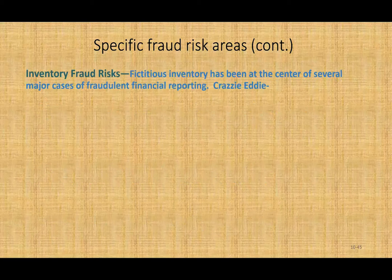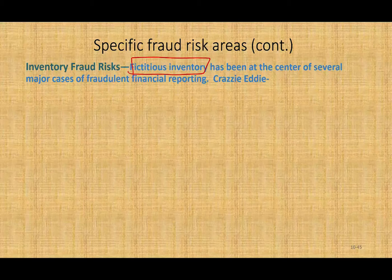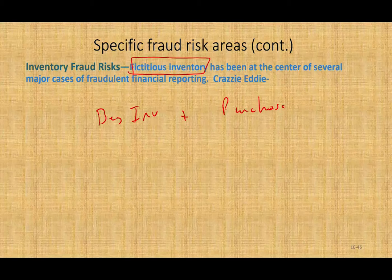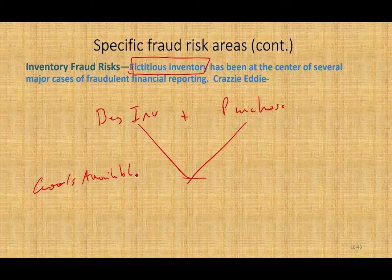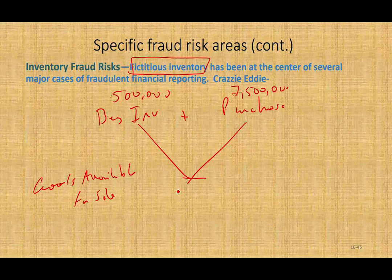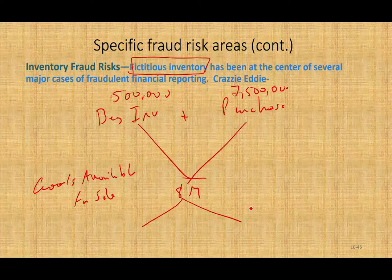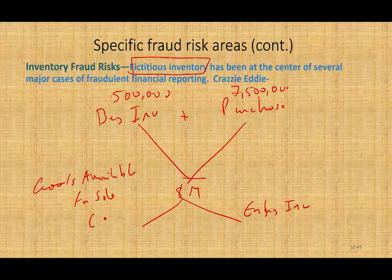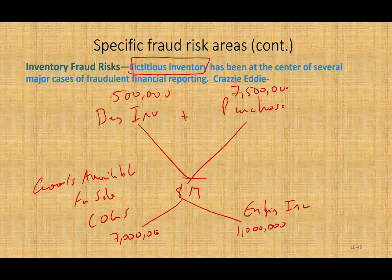Inventory fraud risk: what happens is we have fictitious inventory — we claim that we have more inventory than what we have. If you remember from financial accounting 101, here's the formula: beginning inventory plus purchases gives you goods available for sale. Let's assume we started with $500,000 inventory, purchased $7.5 million, so goods available for sale is $8 million. Goods available for sale either goes to ending inventory — we don't sell it — or it goes to cost of goods sold. So if ending inventory is $1 million, cost of goods sold is $7 million.